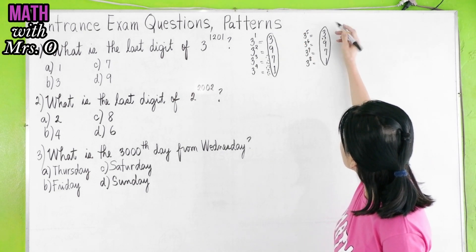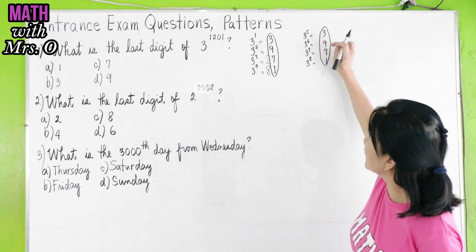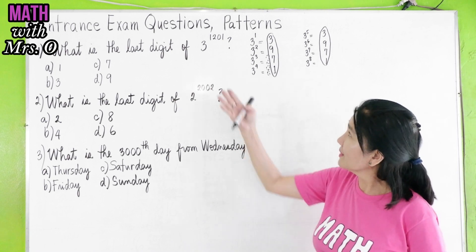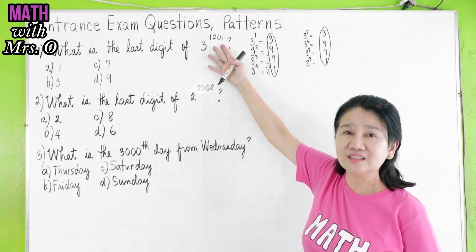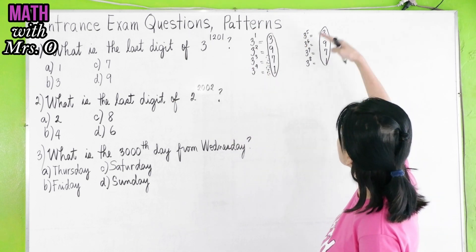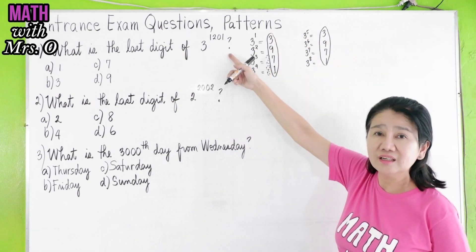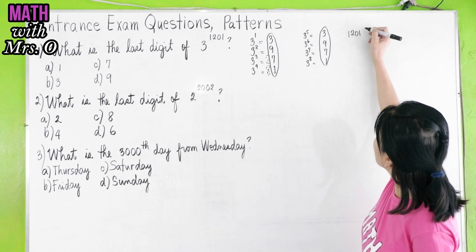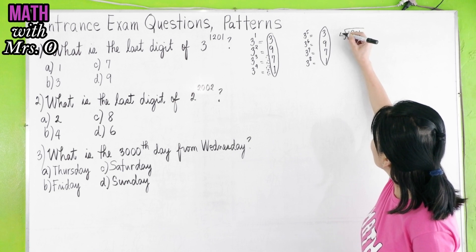3, 9, 7, 1. The pattern is 3, 9, 7, 1. What does that mean? How do we get the last digit here? The pattern repeats after the 4th time you multiply 3. Therefore, we have to divide 1,201 by 4.